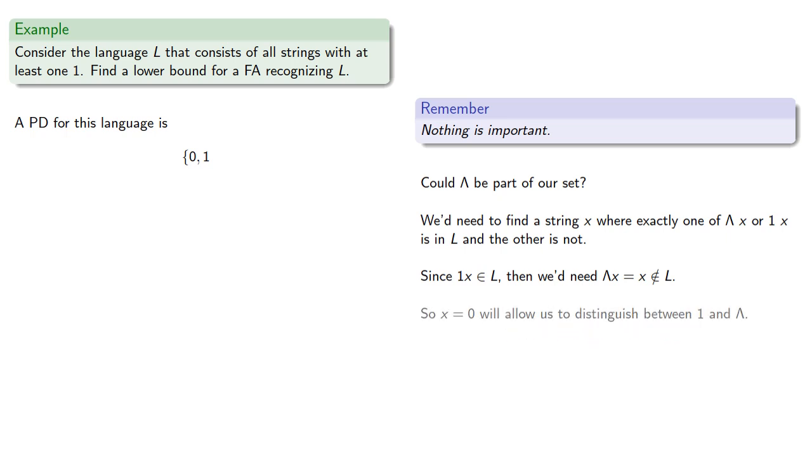So x equals 0 will allow us to distinguish between 1 and lambda. And the fact that x equals 0 is already part of our set doesn't matter. All we need is some string that allows us to distinguish between lambda and 1.